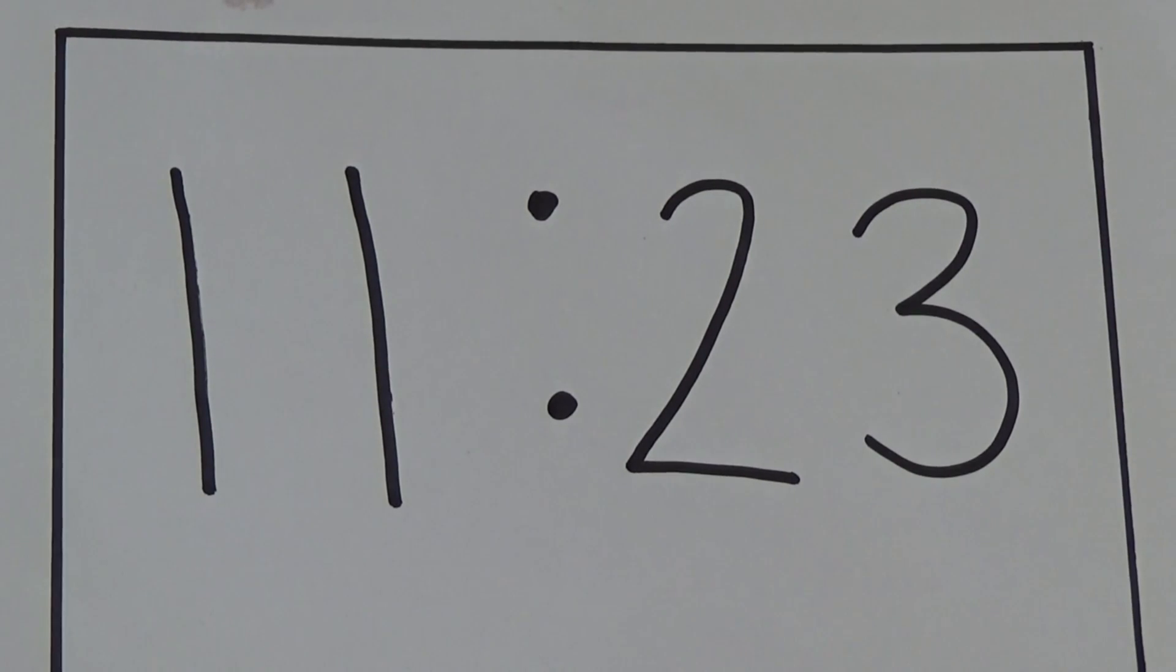When we read the time in digital, the first number tells us what hour it is and the second number tells us the minutes. Here the hour is 11 and the minutes are 23. So the time is 11:23 or 23 minutes past 11.